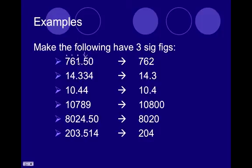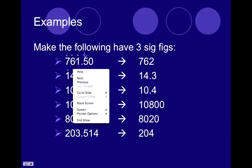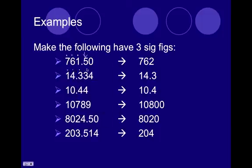three. Round according to that guy. It's a five. Tells us to round the one up. 762. Same thing here. One, two, three. Round according to that guy. Three tells us to keep this guy the same. 14.3. One, two, three. Four tells us, round according to this guy. Four tells us to keep this guy the same. So 10.4.